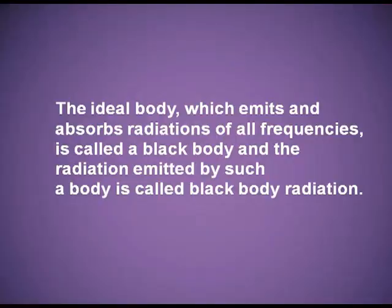Planck explained the black body radiation. The ideal body which emits and absorbs all types of radiations is known as a black body, and the radiations emitted by the black body are known as black body radiations. Max Planck suggested that atoms and molecules absorb or emit light in discrete units, not in a continuous manner. That smallest packet of energy was named by Planck as a quantum.